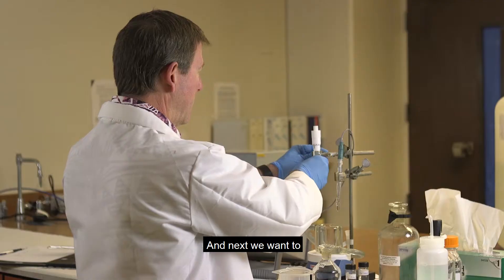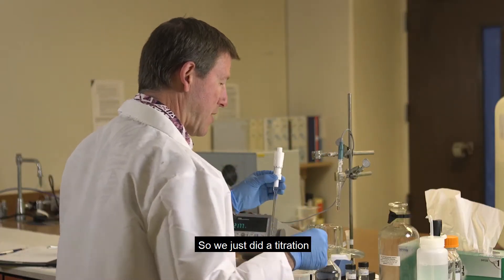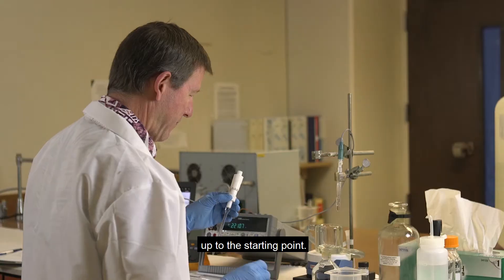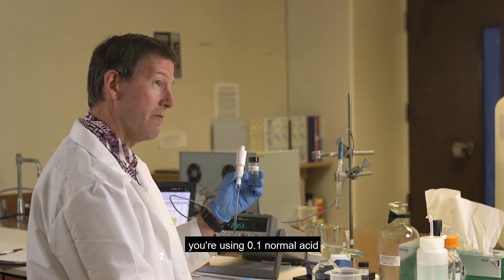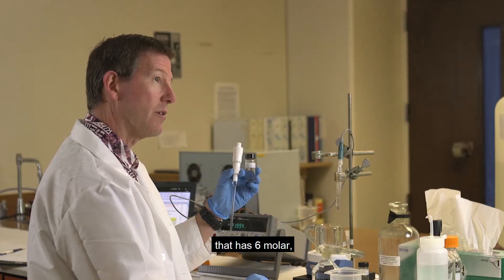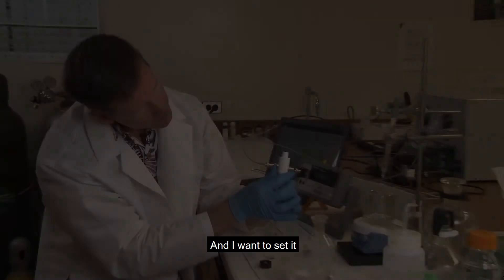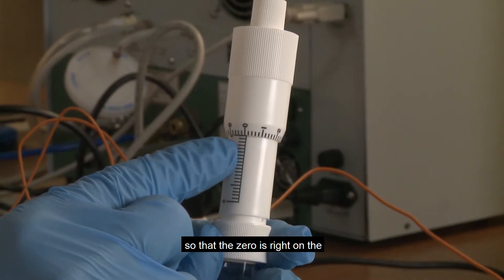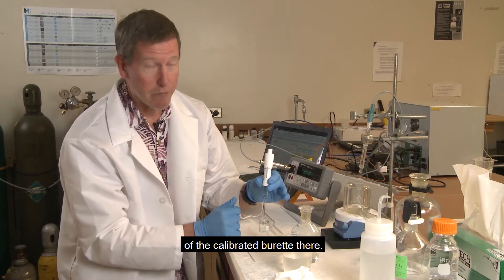And next we want to fill our burette. So we just did a titration before, so I have to refill this burette back up to the starting point. Now, you're using 0.1 normal hydrochloric acid for the titration that has 0.6 molar sodium chloride in it, and I want to set it so that the 0 is right on the vertical line of the calibrated burette there.